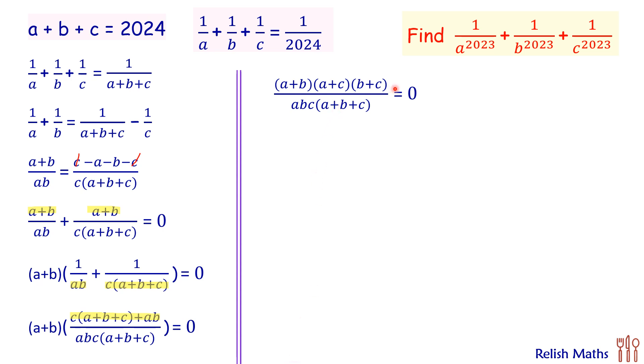Now here, this term will be 0 if and only if numerator is 0. And numerator will be 0 if and only if one of these particular algebraic expressions will be 0. That is, either a plus b is 0, or a plus c is 0, or b plus c is 0.